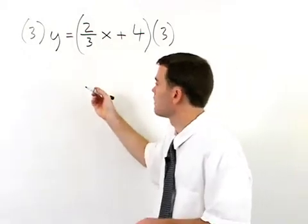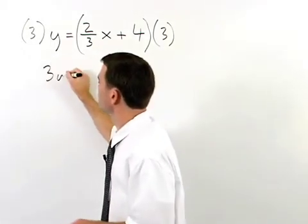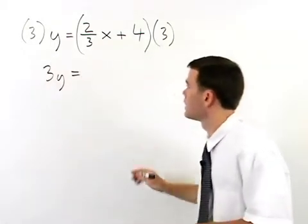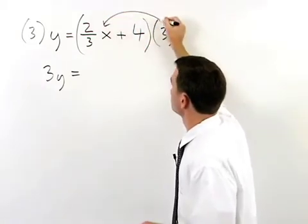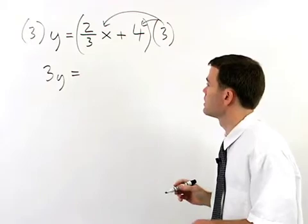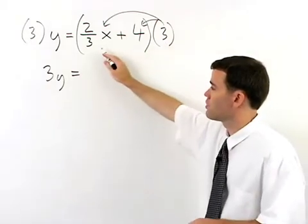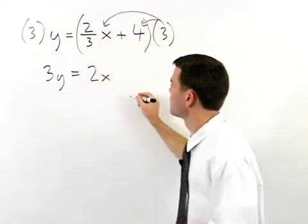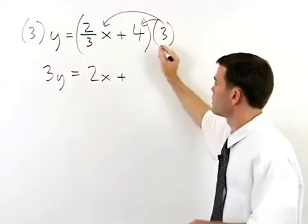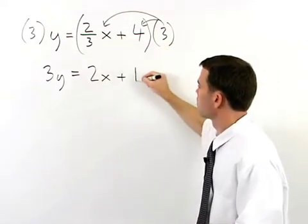On the left we have 3y and on the right we distribute the 3 through both terms inside the parentheses to get 3 times two-thirds x which is 2x plus 3 times 4 which is 12.